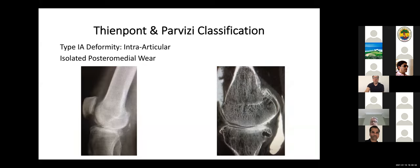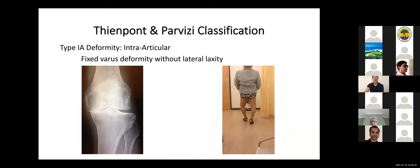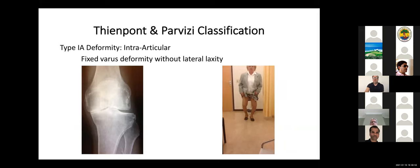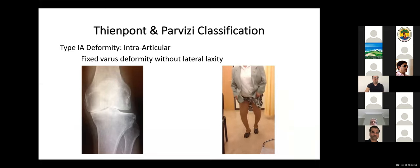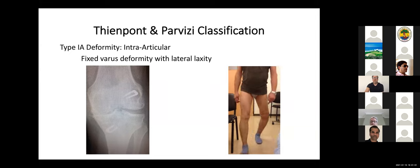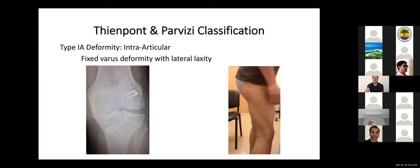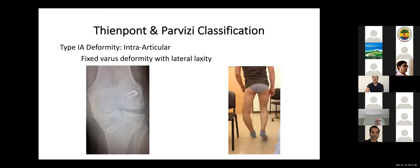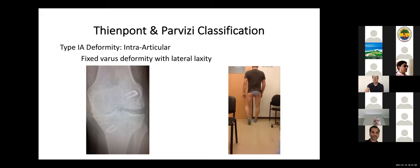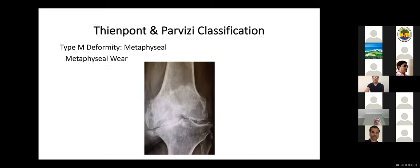This is a posteromedial wear. This is in case where you lost the ACL, you can see that there is a shift posteriorly, and you can see on the ArthroCT that the wear in this case is posterior and no longer anteromedial. Then we had fixed varus deformity without any lateral laxity. You see that this lady, when she's walking, she has a varus knee, but no specific varus thrust. And finally, you have this case where you can see that there is lateral laxity in a fixed varus deformity knee. So this was all the types of intra-articular deformity.